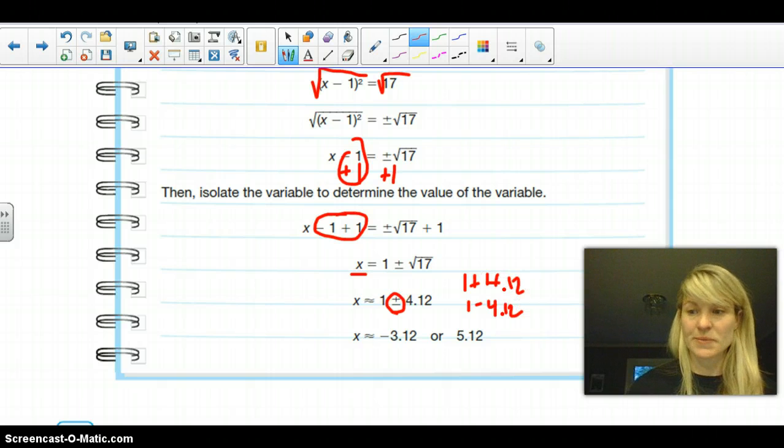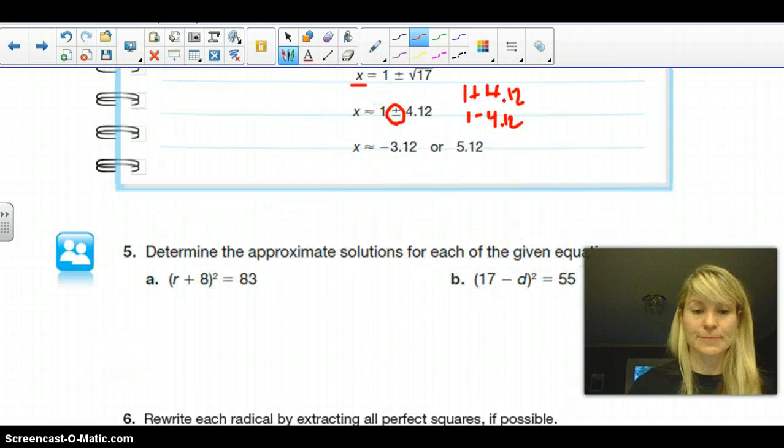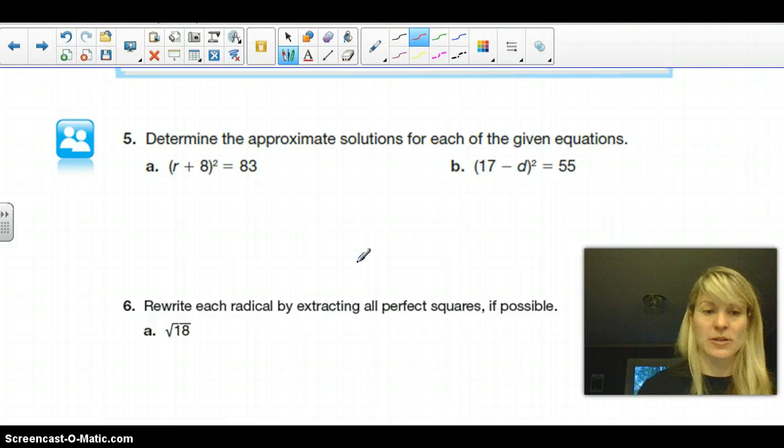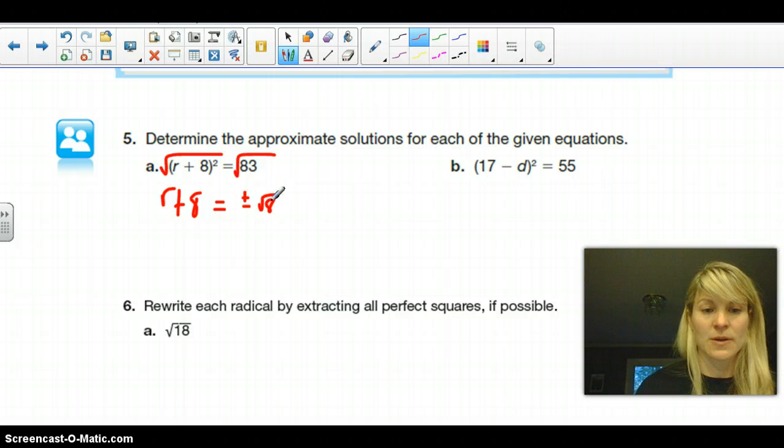So the plus or minus gives us two different problems. So let's go ahead and try that down here. Determine the approximate solutions for each of the given equations. So again, we can see it's already factored for us as to the second power. So I can square root this side and square root this side. Once I square root this side, the square root of (r + 8) squared is just r + 8. And then we have plus or minus the square root of 83.